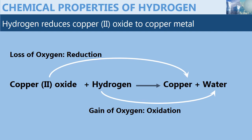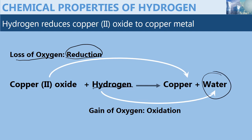Hydrogen reduces copper 2 oxide to copper metal, and the reaction is shown. Copper 2 oxide loses oxygen, so it undergoes reduction. Hydrogen gains oxygen and undergoes oxidation, and hydrogen is the reducing agent.